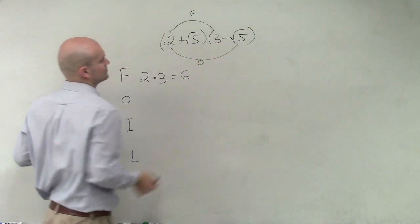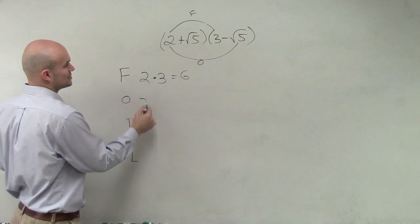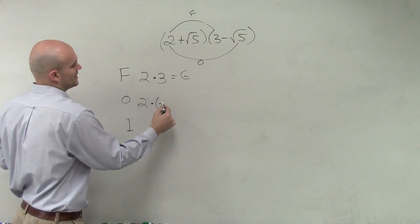Then we do the outer, which is going to be 2 times negative square root of 5.